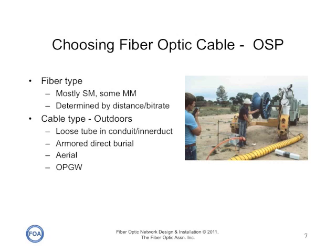For outside plant cable, the fiber is mostly single mode, although there is some multi-mode used in utility applications and transformer substations. The outdoor cable is typically a loose tube cable. It may be direct buried if it's armored, or it can be run aerially. There's even optical powered ground wire where utilities actually run the fiber inside a conductor of their high voltage network. As we always say, the cable must meet the environmental requirements of the installation.